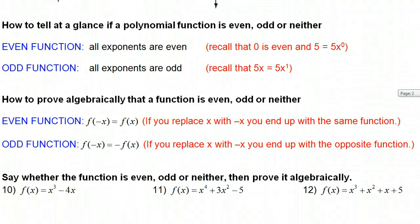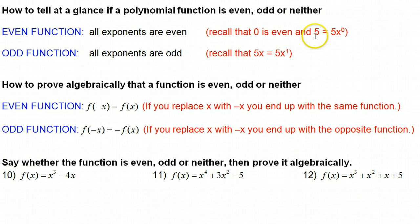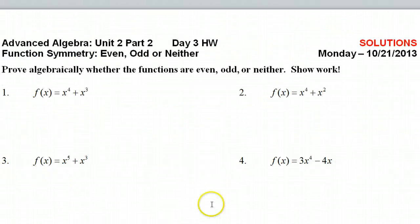Another thing about even functions: all the exponents will be even. Remember that zero is even, and if I have a number like five, that's the same as five to the zero power. For an even function, all exponents will be even. For an odd function, all exponents will be odd — keeping in mind that something like 5x is like 5x to the first power, which would be odd.